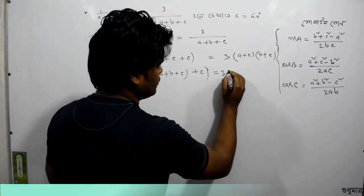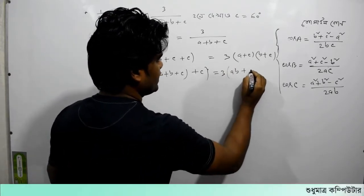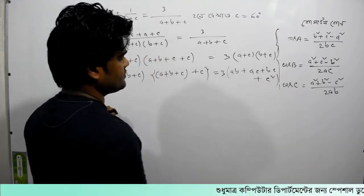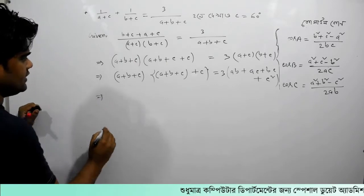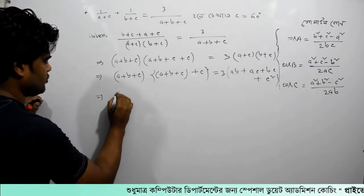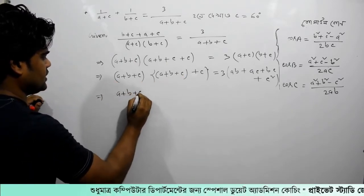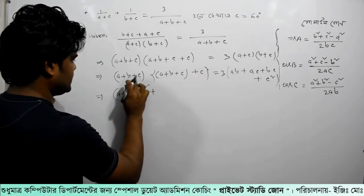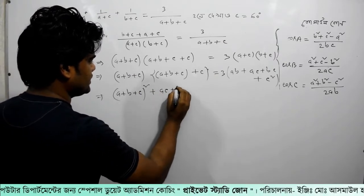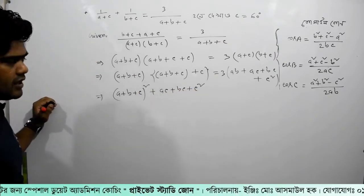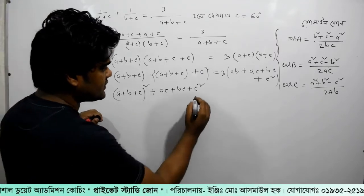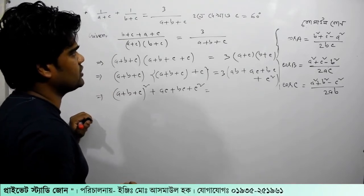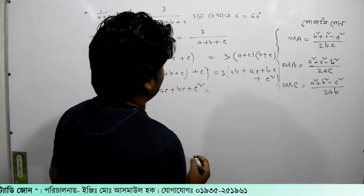Well, we have to check this one. AB plus AC plus BC plus C square. Let's see this one. If A plus B plus C, what is A plus B plus C square? This one is A plus B plus C square. How do we have to check this one? If we have to check this one, we can check this one.